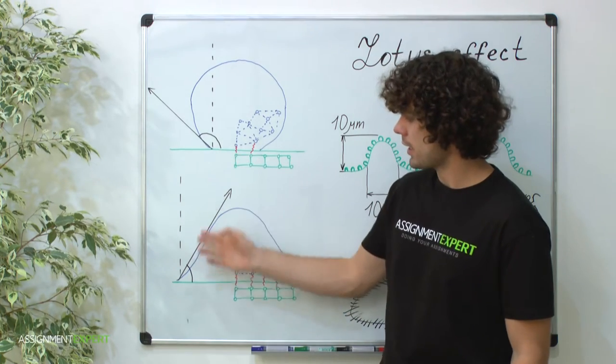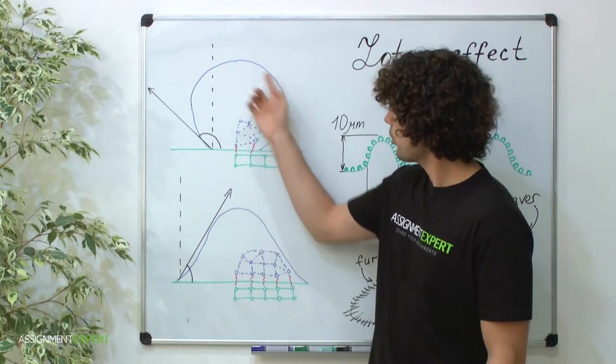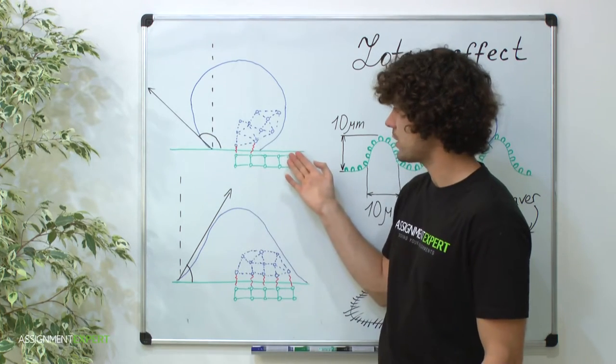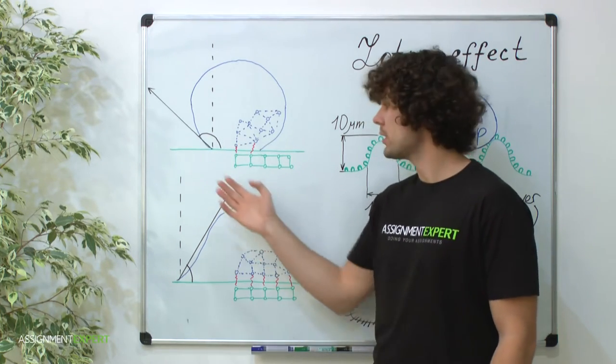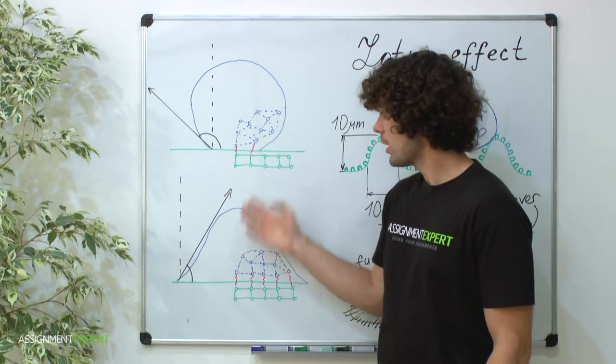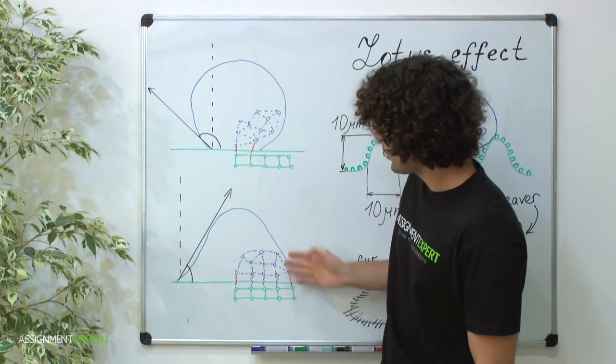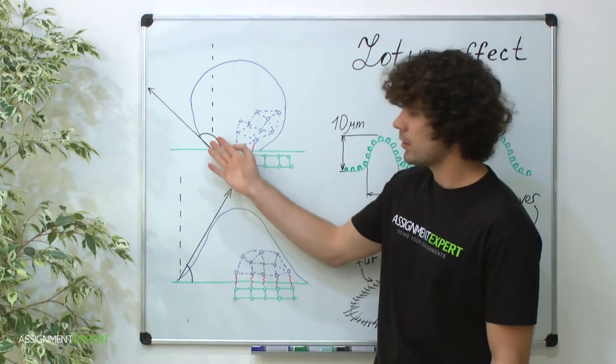The contact angle, or wetting angle, is an angle at which the liquid drop meets the solid interface and is determined by the ability to moisten the surface. As the tendency to spread over the surface decreases, the contact angle increases.